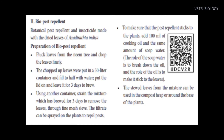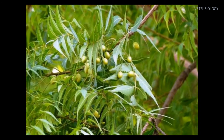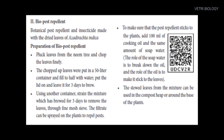Let us see how to prepare a botanical pest repellent using dried leaves of Azadirachta indica, that is neem. Pluck the leaves from the neem tree and chop the leaves finely. Then put them in a 50 liter container. Half of the container must be filled with water, then close it with the lid and leave for 3 days to allow fermentation to take place.